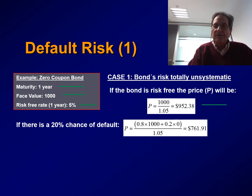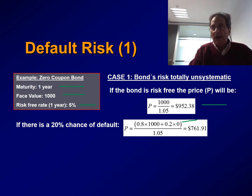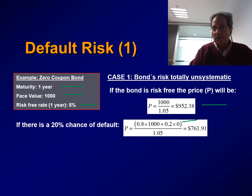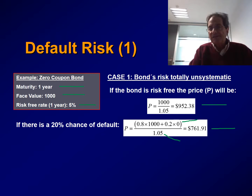Now let's assume there is a 20% probability of default. In that case, the numerator is no longer 1,000, but the expected cash flow at maturity. This expected cash flow equals 0.8 — the probability of full payment — multiplied by 1,000 (the face value), plus 0.2 — the probability of default — multiplied by zero (the amount received in case of default). Given that systematic risk remains at zero, we discount at the 5% rate and obtain a new price for the bond of 761.91.